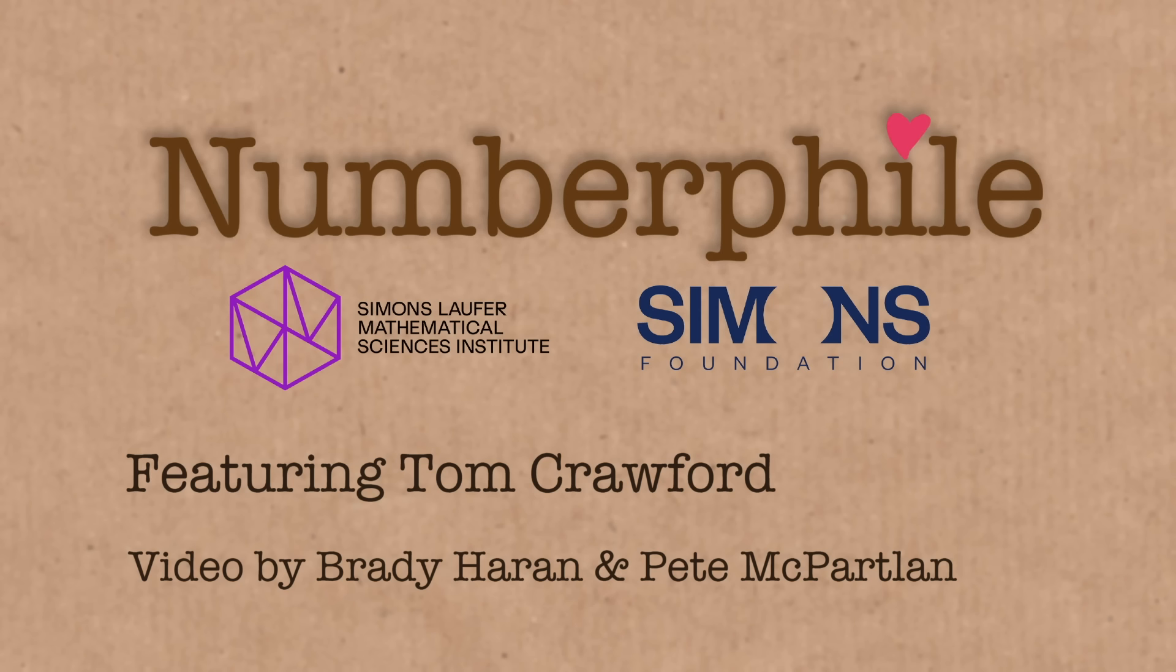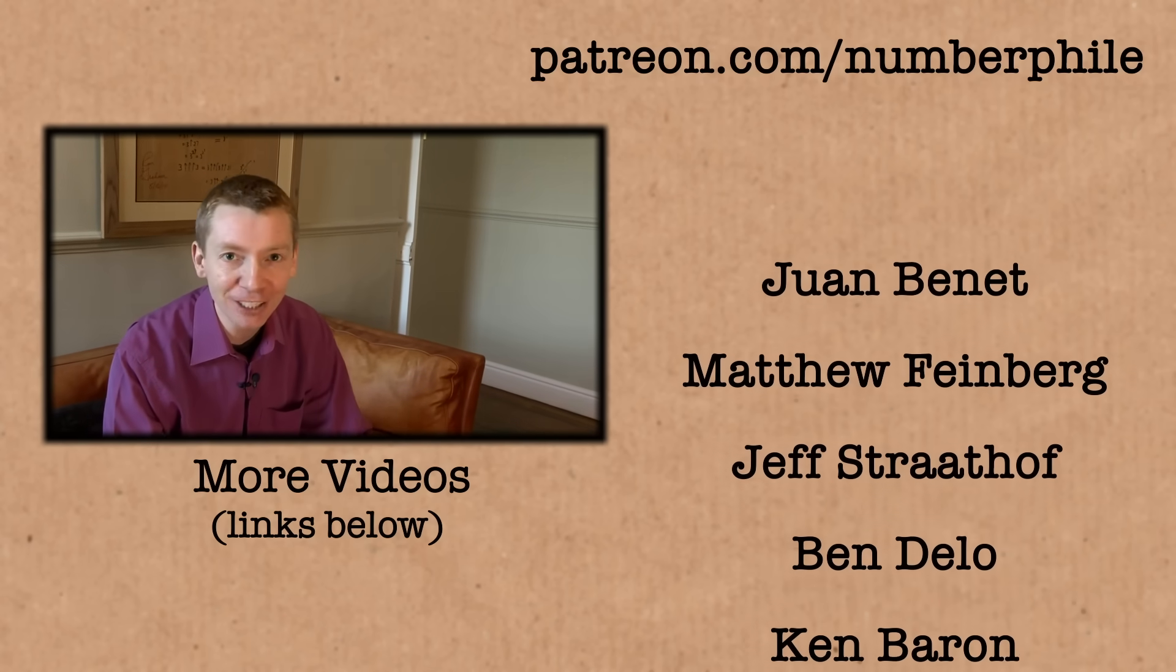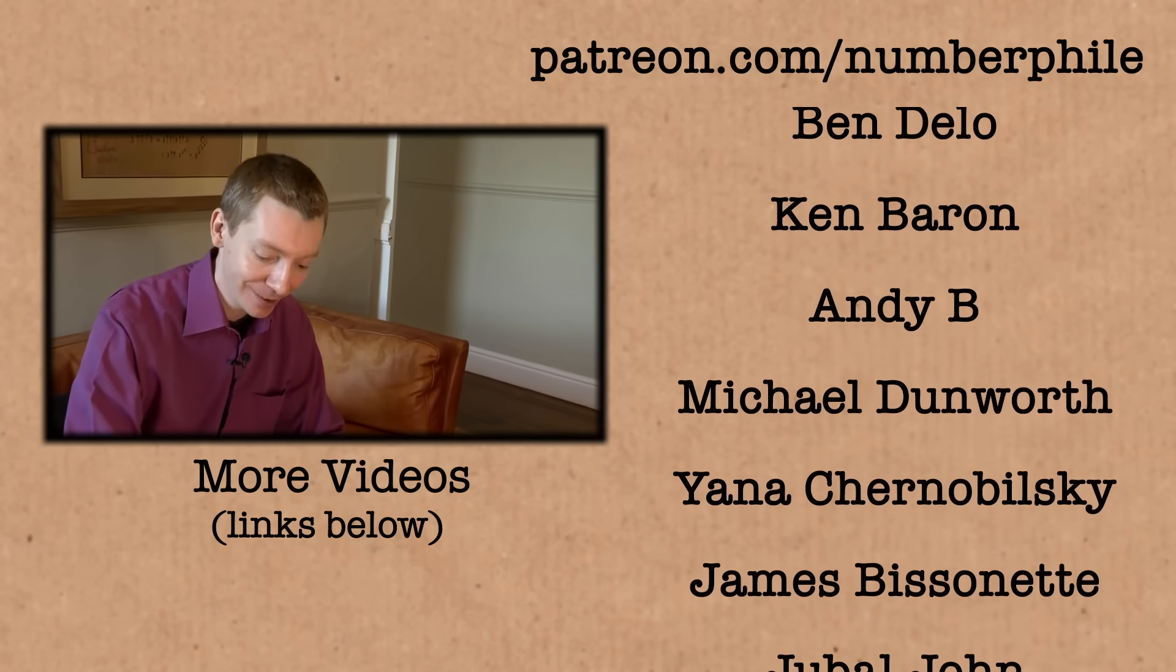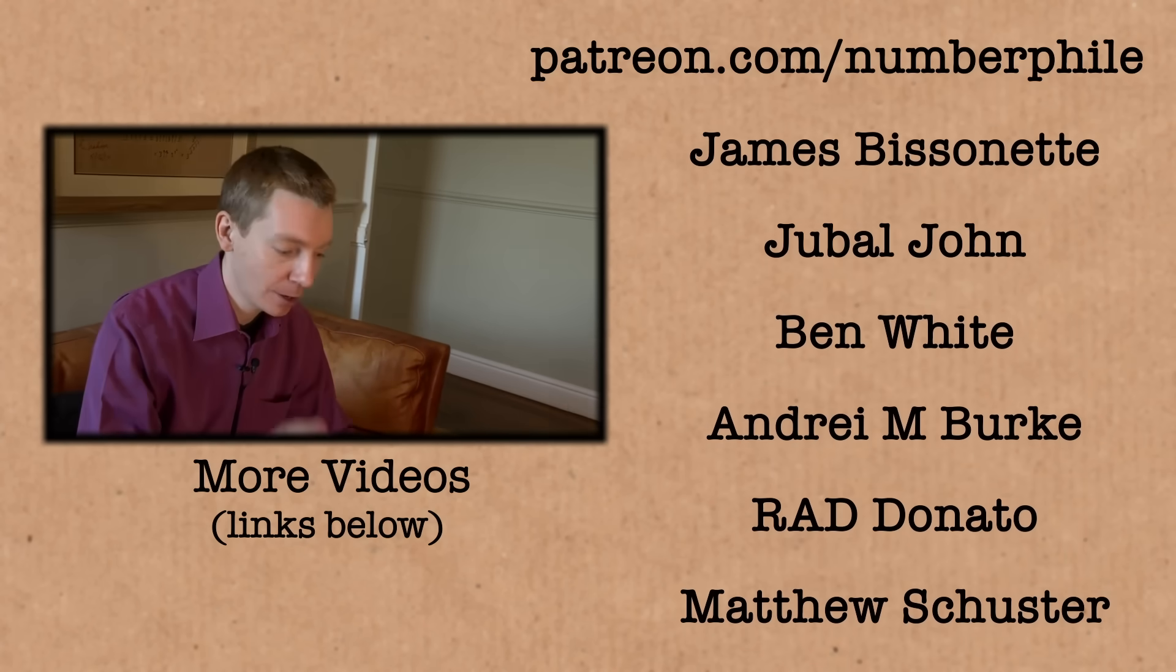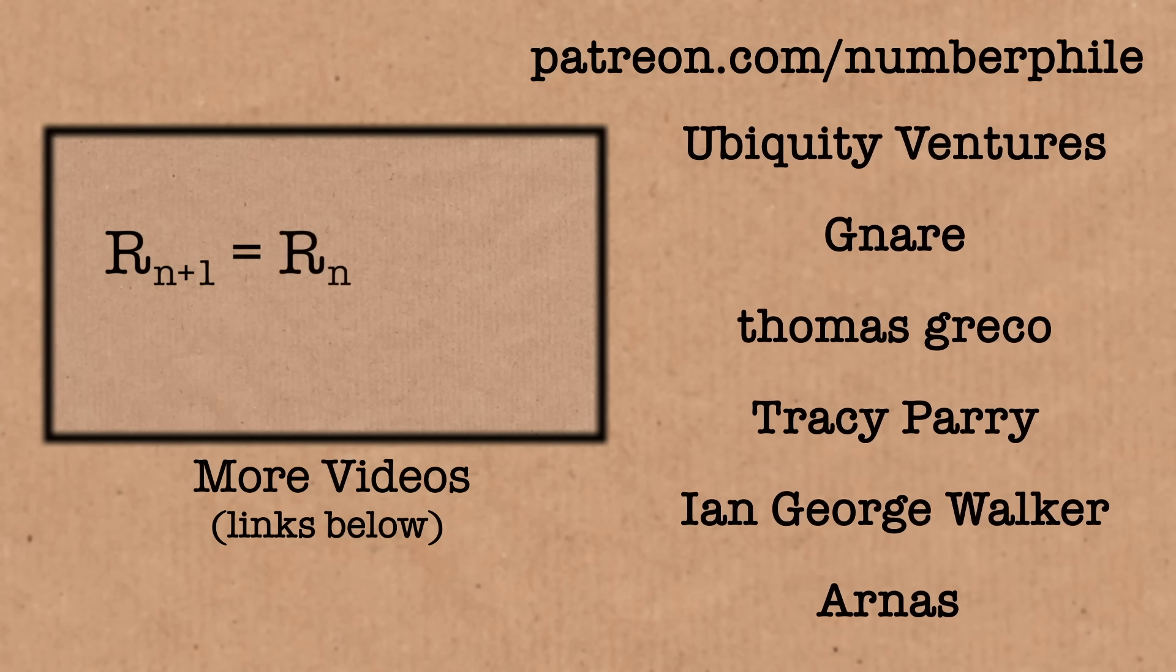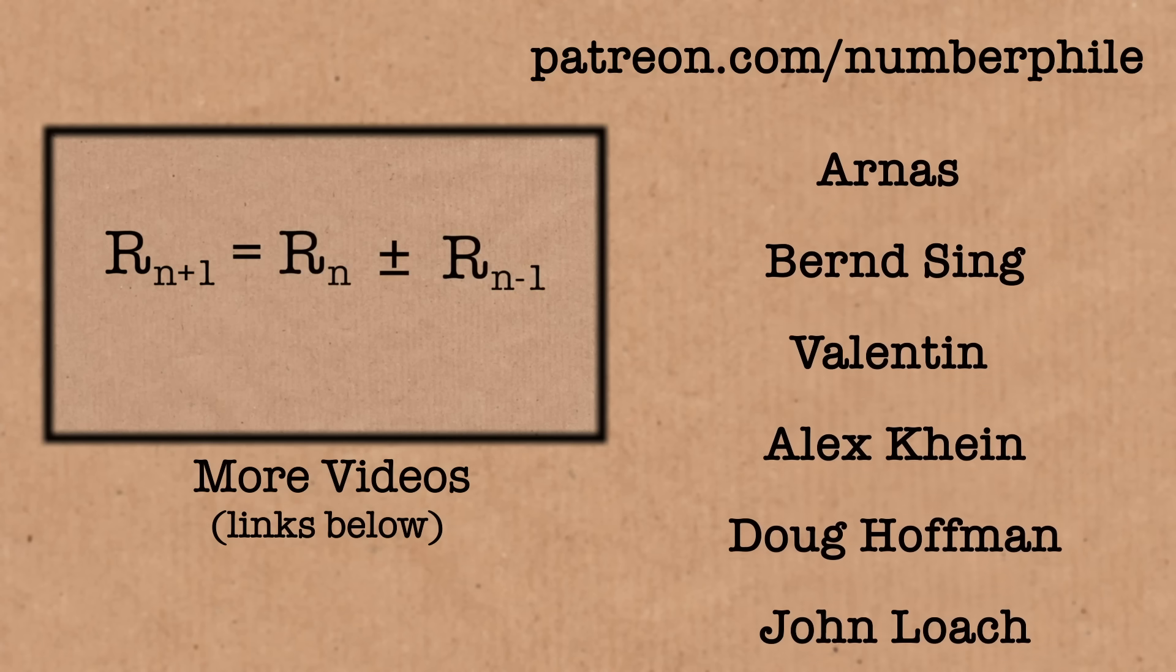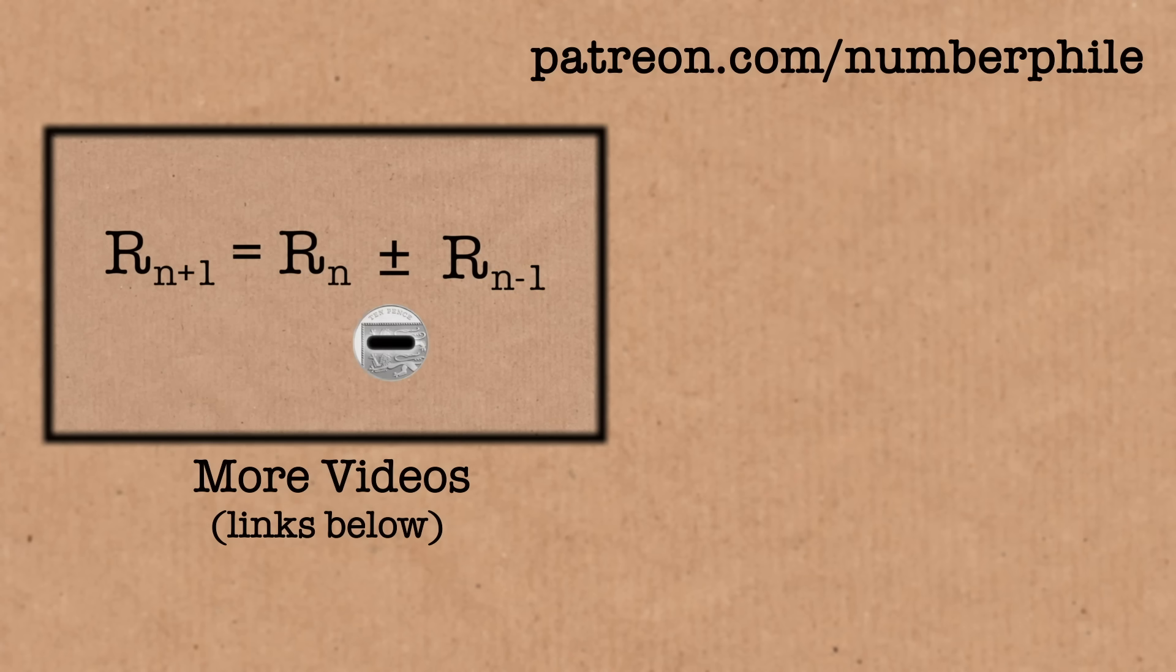That was just a little recap of Fibonacci, because what I want to do now is randomize this. Fibonacci, we know everything about it. So now let's use my coin to randomize this a little bit. We're going to create a random Fibonacci sequence. The next one is going to be the sum or the difference of the previous two numbers. We're going to start in the same way with a one and a one.